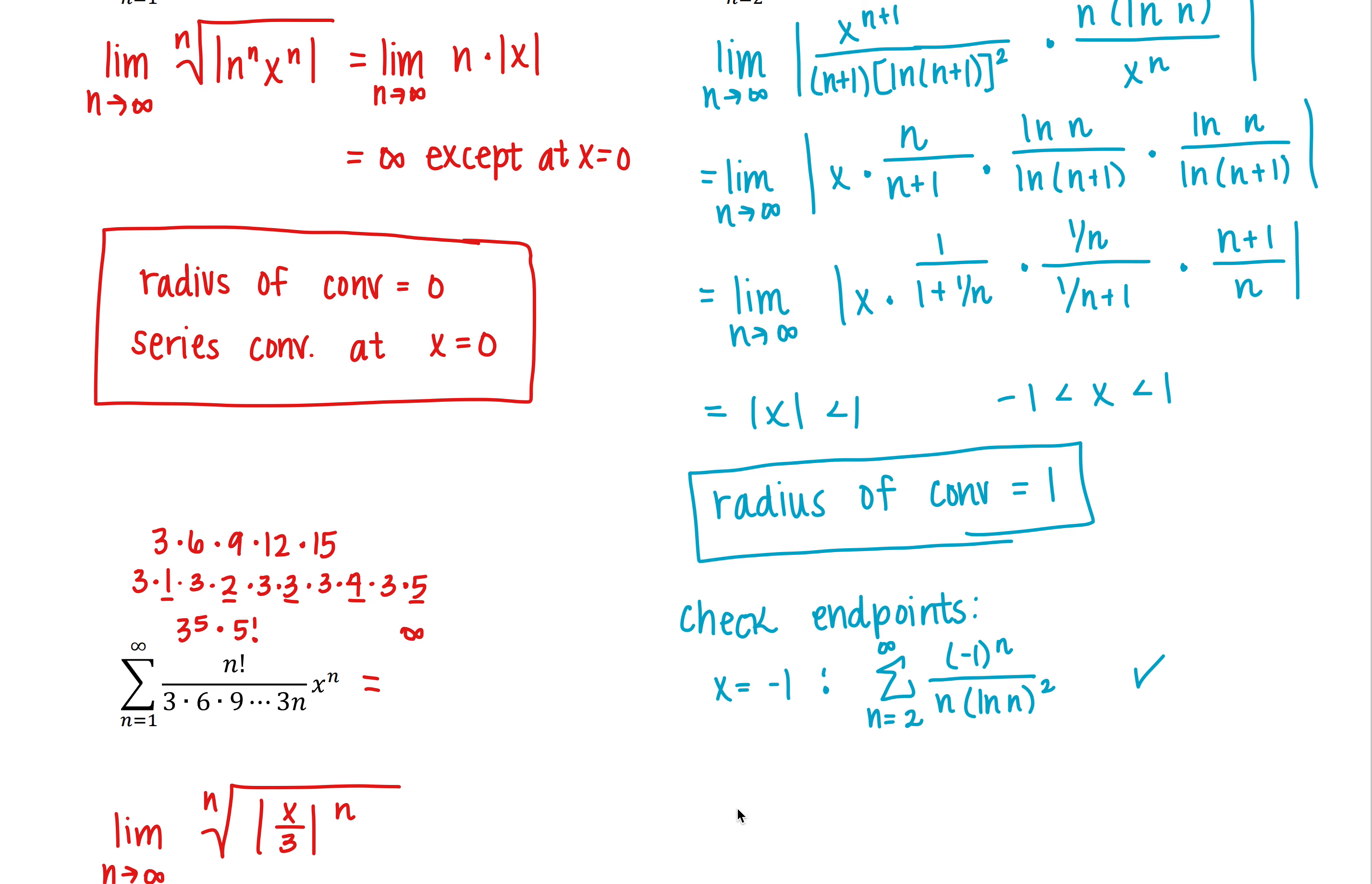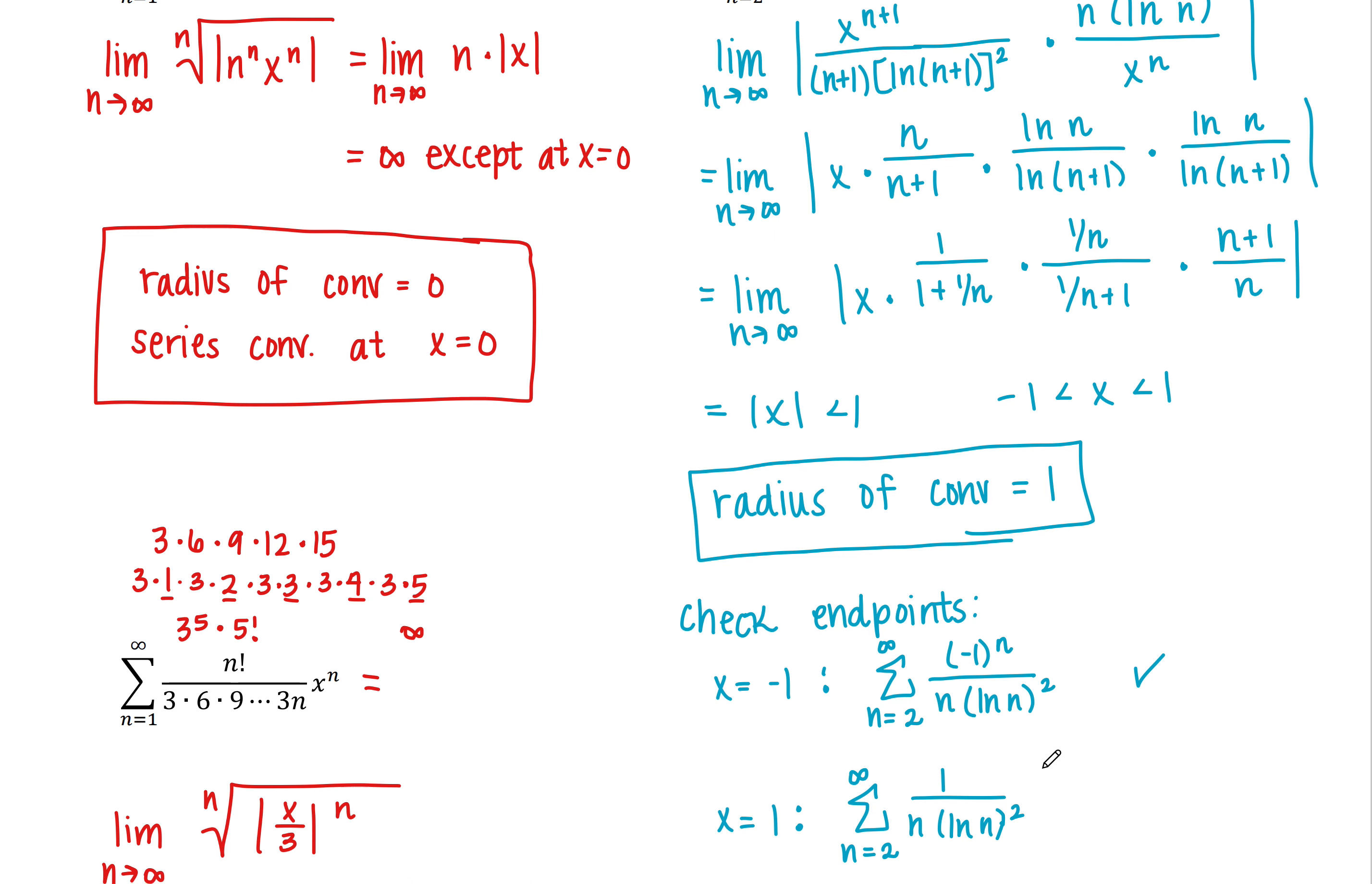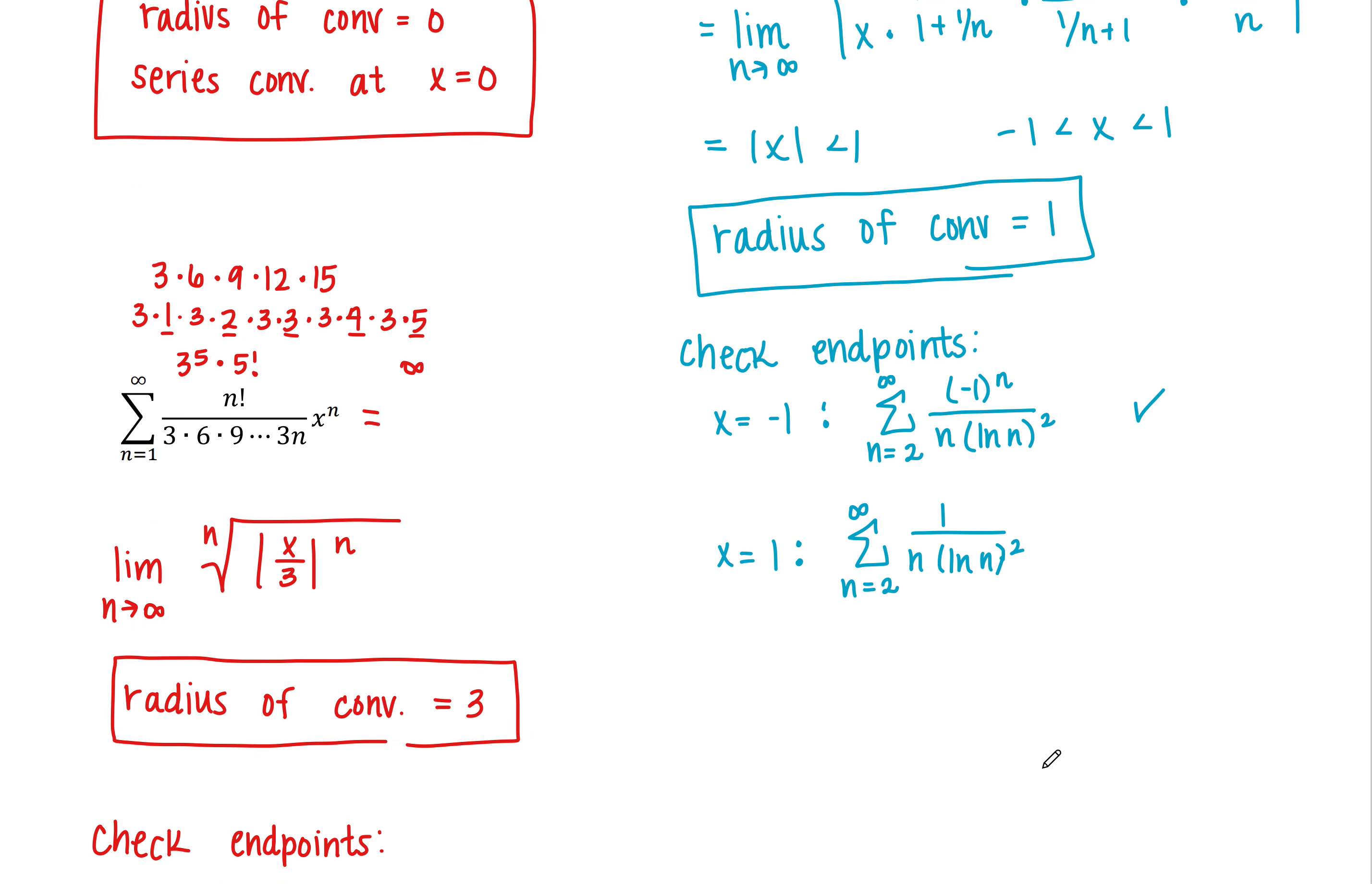Let's now look at x equals positive 1. So plugging in, we'd have positive 1 to the nth power. Well, 1 to the nth power is just a 1. So we're now looking at 1 over n times the natural log of n squared.